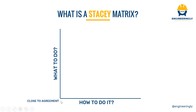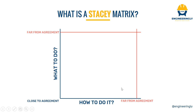We have all the technology available in order to perform the task. But as we go further up on the Y-axis and to the right on the X-axis, we are far from agreement — we do not have the necessary tools and techniques, and we don't know exactly what we are going to deliver.